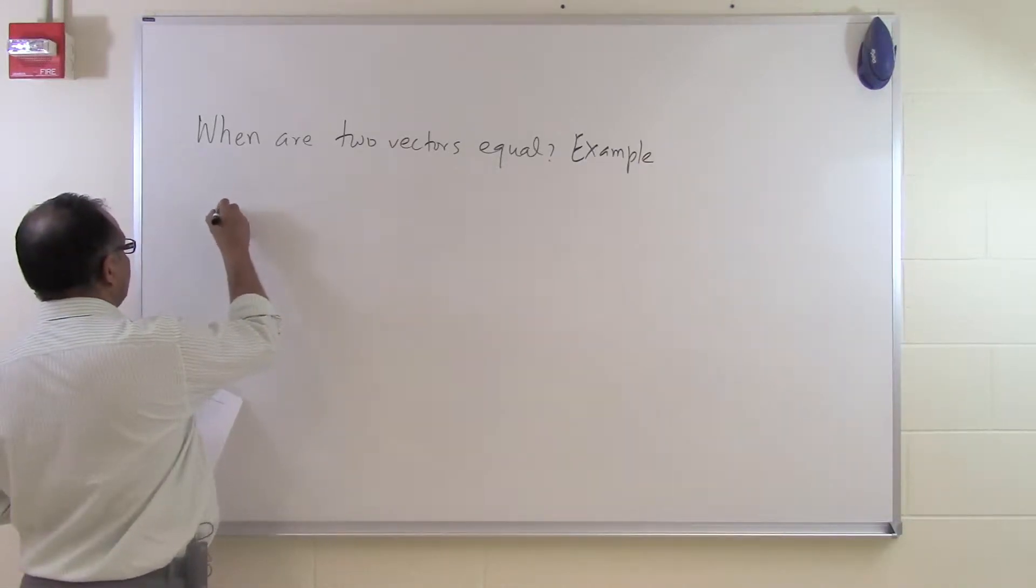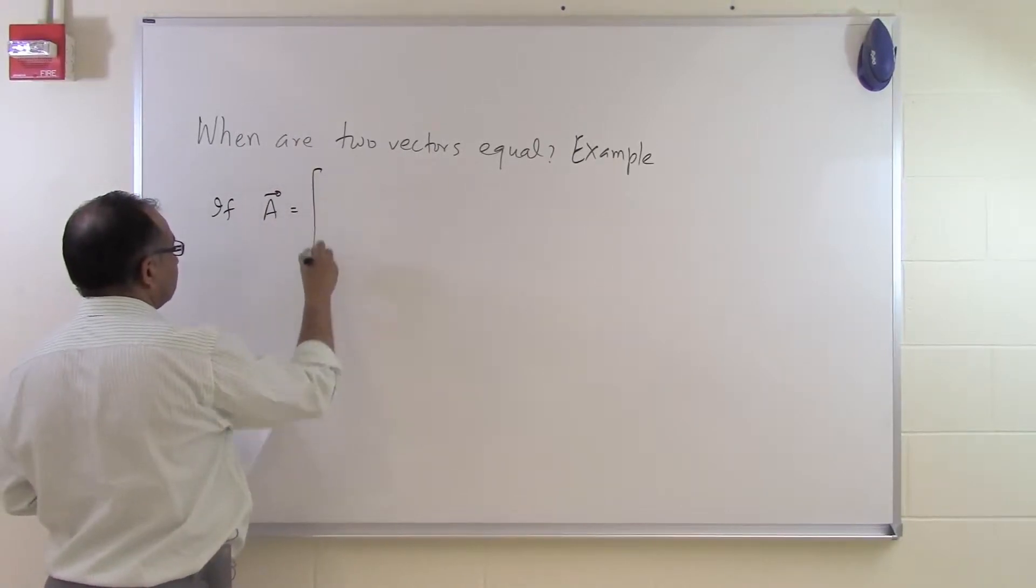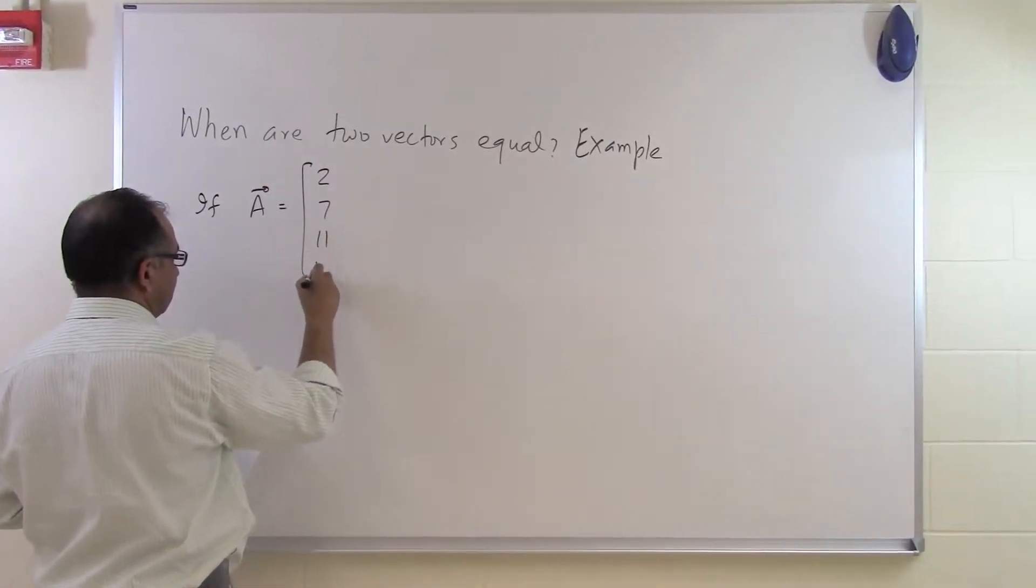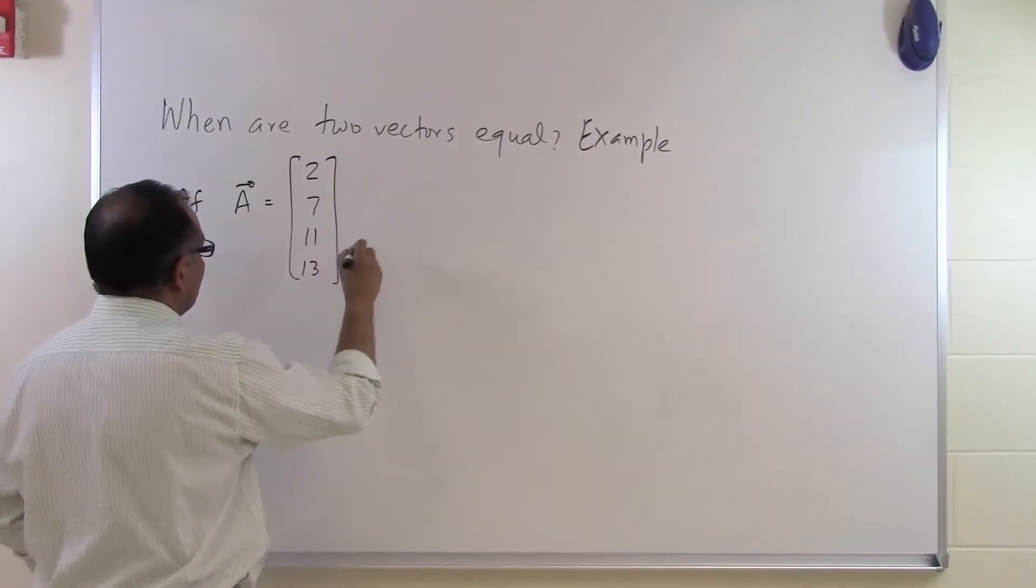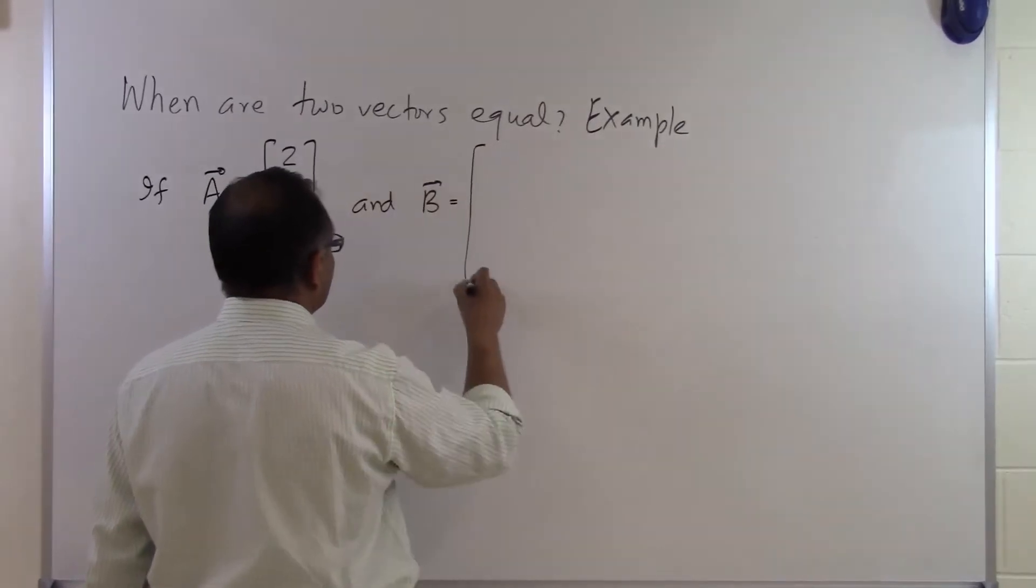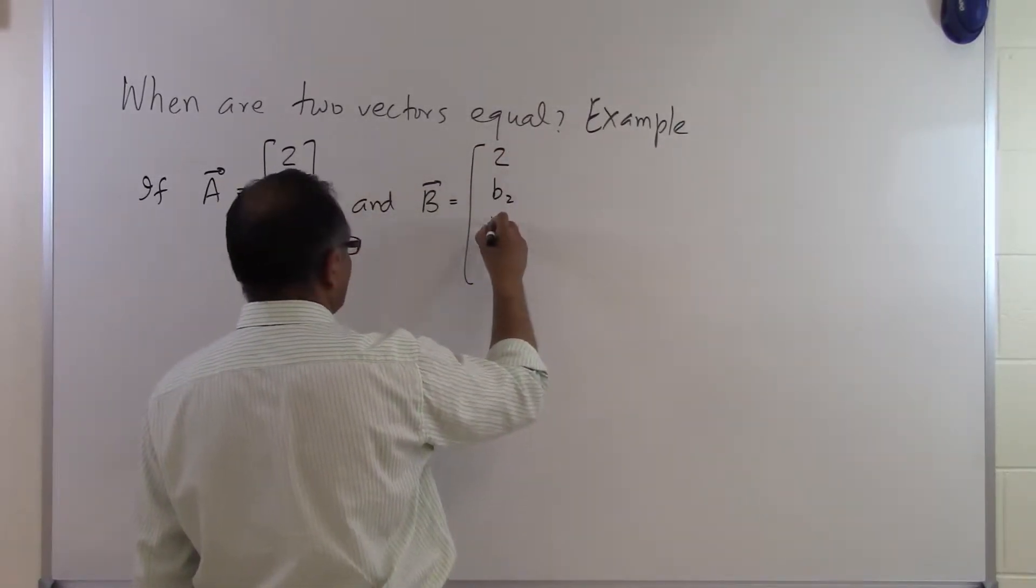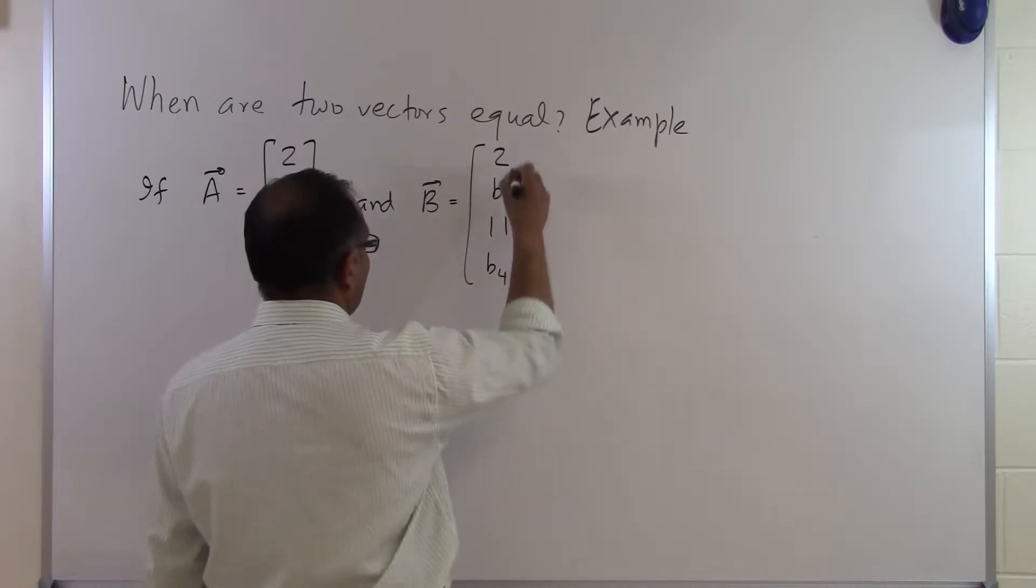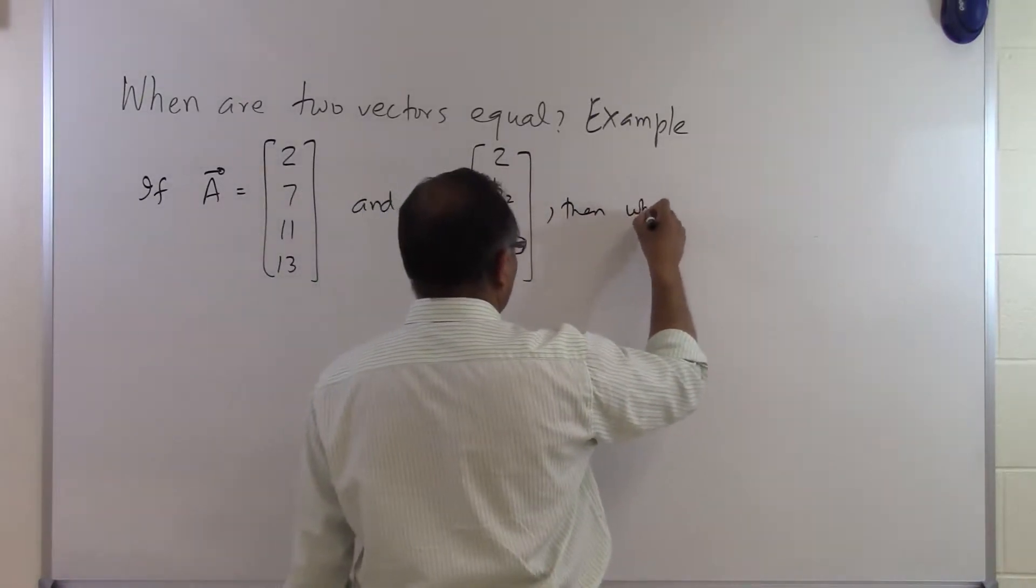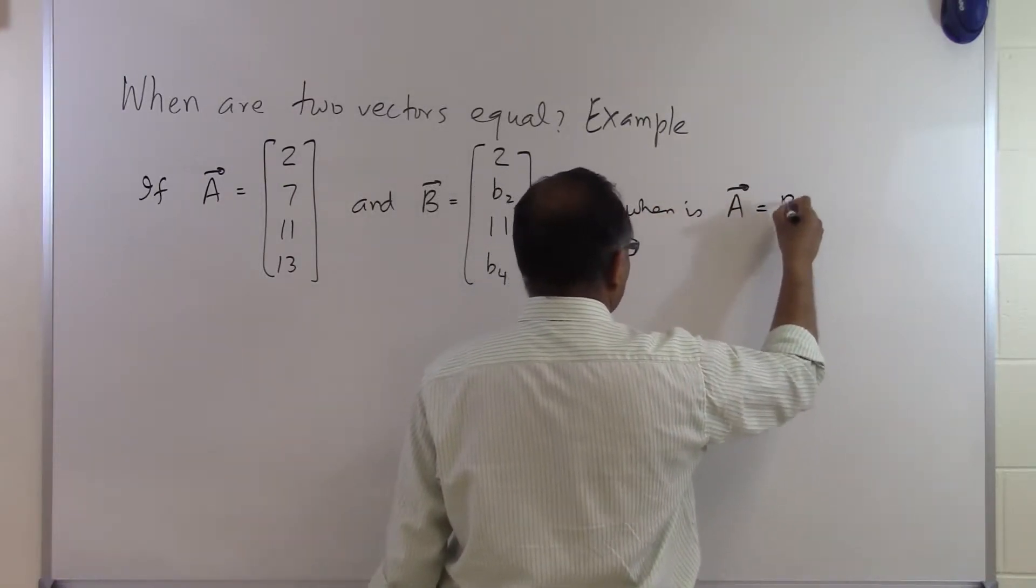Let's suppose vector A is given as [2, 7, 11, 13], and B is given as [2, B2, 11, B4]. When is vector A equal to vector B?